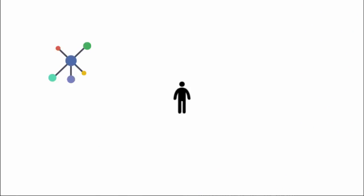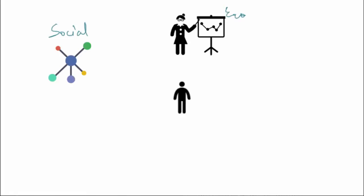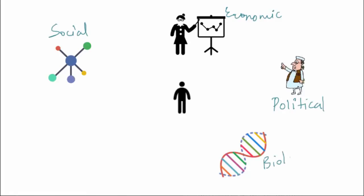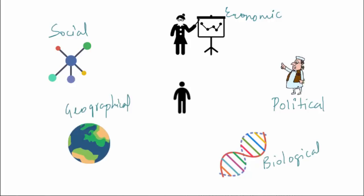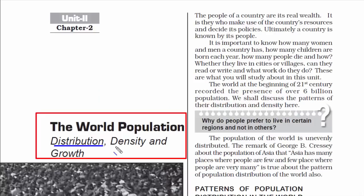Well, think of it this way. There are so many variables associated with humans, like social, economics, political, biological, genetics, geographical, etc. They all are interlinked with humans — we are at the center of all of this. And if we study distribution of people, then we will be able to serve them well.